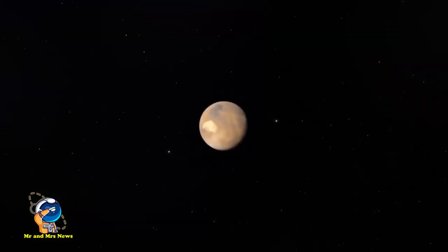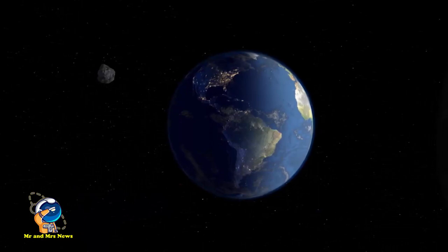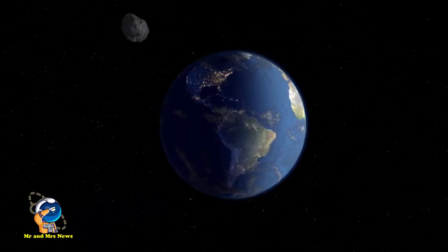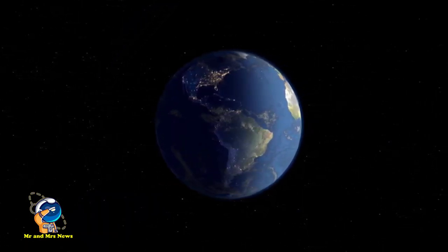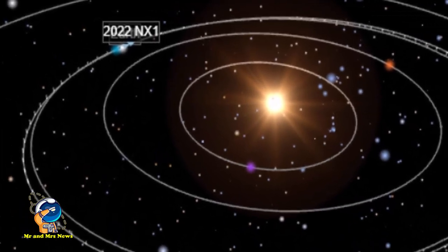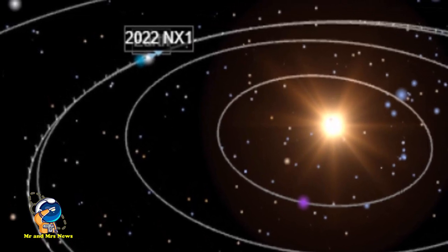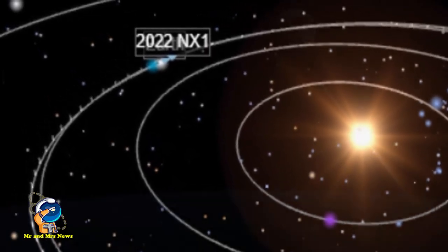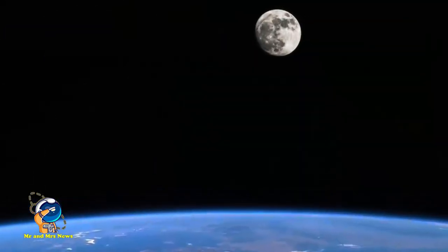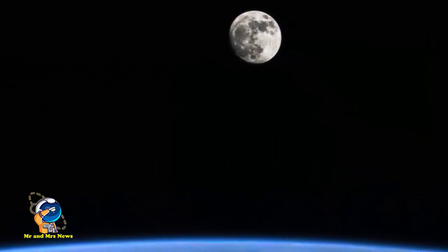Dalam pengamatan itu, 2022 NX1 masuk sebagai asteroid kategori Apollon dan bisa dibilang sebagai bulan mini. Dalam perhitungan mereka, 2022 NX1 sebenarnya pernah terlihat juga di orbit bumi, tepatnya sepanjang 1980 hingga 1981, di mana 2022 NX1 terlihat selama 29 hari.